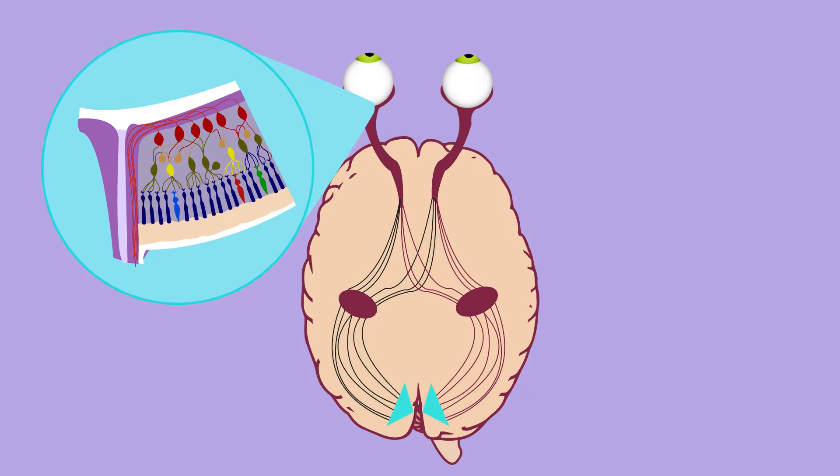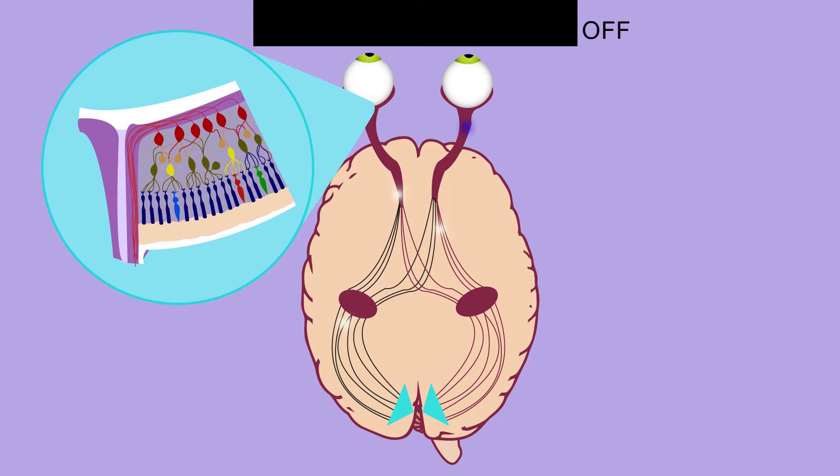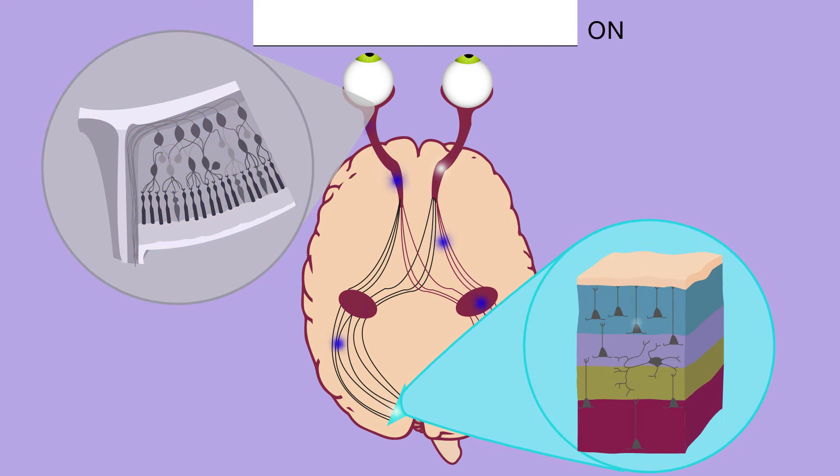Vision begins in the retina with special cells that respond either to increases in light or to increases in dark. These on and off pathways eventually converge onto single cells in the cortex.